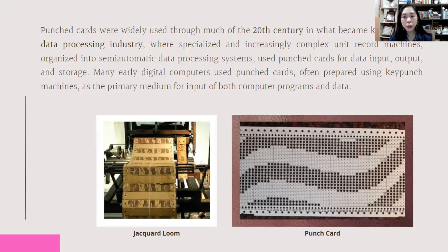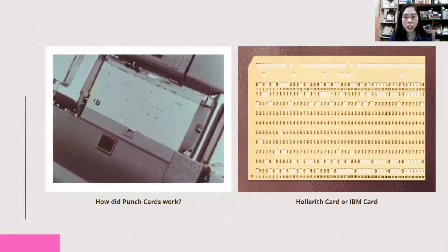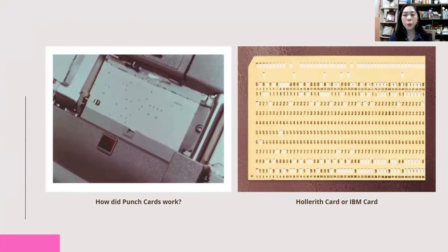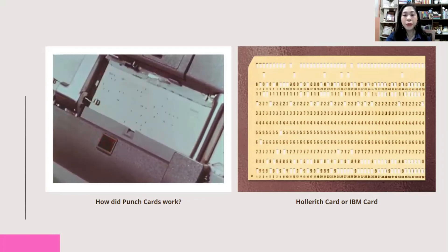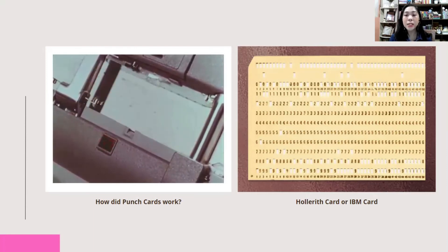Punch cards were widely used through much of the 20th century in what became known as the data processing industry. In early computers that relied on punch cards, the punch card reader would start on the top left side of the card, reading vertically from top to bottom. After reading a column, it would move to the next column, and the information read would be written to computer memory. The computer would then be instructed to execute a code, and if information was outputted or printed, it would be outputted as punch cards. The punch card stores data by punching holes that represent letters or numbers in specific column locations. To read this data, the card must be run through a machine that can detect or sense the location of the holes.